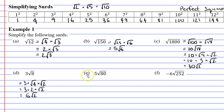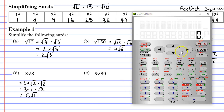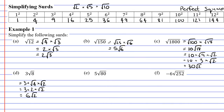Looking at question E — we've got 5 times the square root of 80. Looking for perfect squares that fit into 80: does 16 fit? Yes — 16 times 5 makes 80. So we write 5 times the square root of 16 times the square root of 5. The square root of 16 is 4, so we get 5 times 4 times root 5. 5 times 4 is 20, giving us 20 root 5.